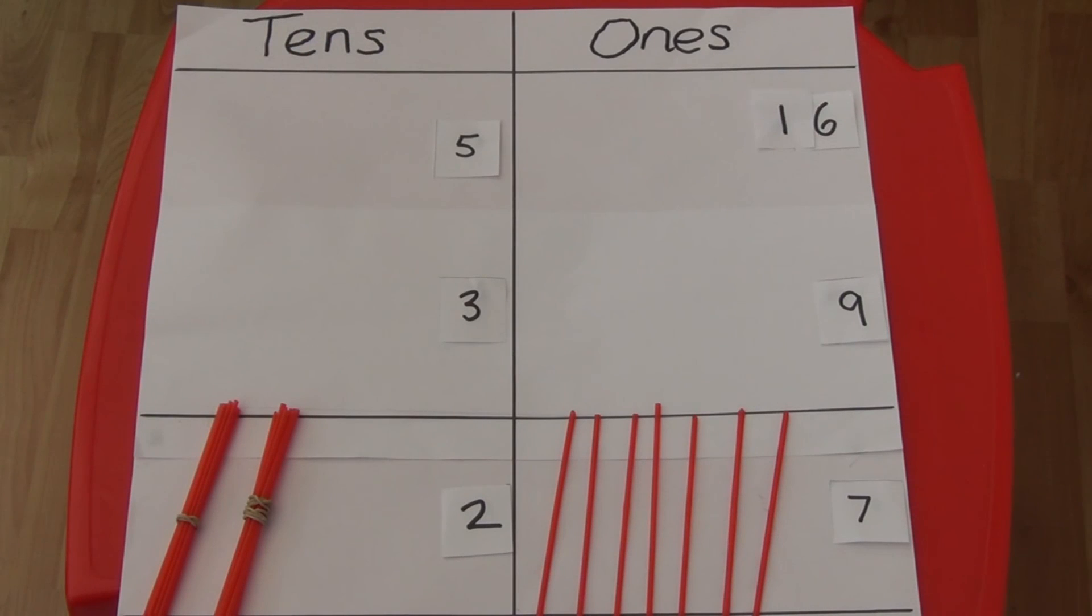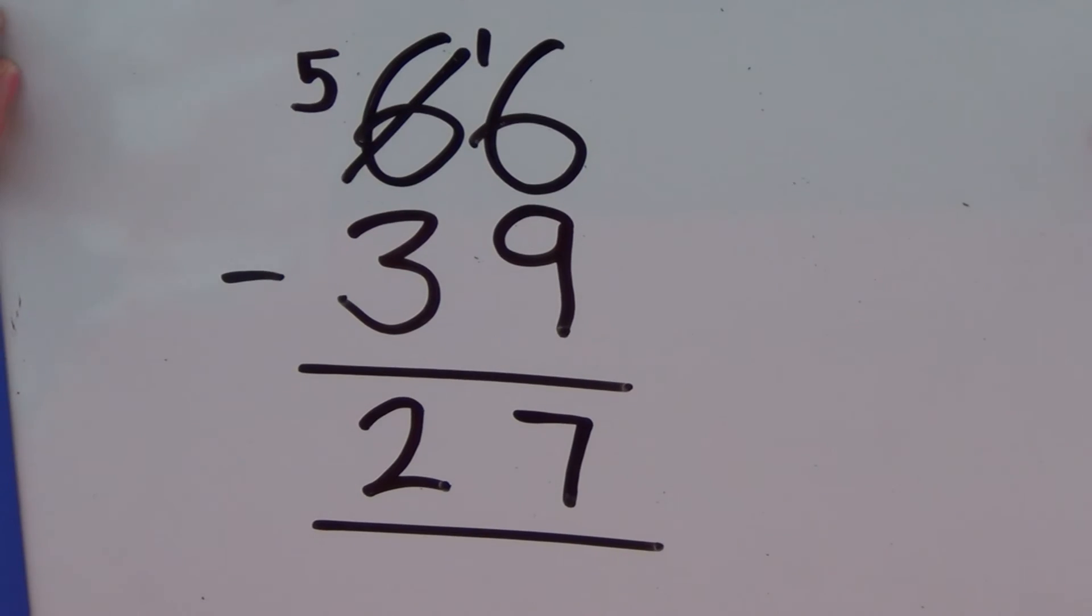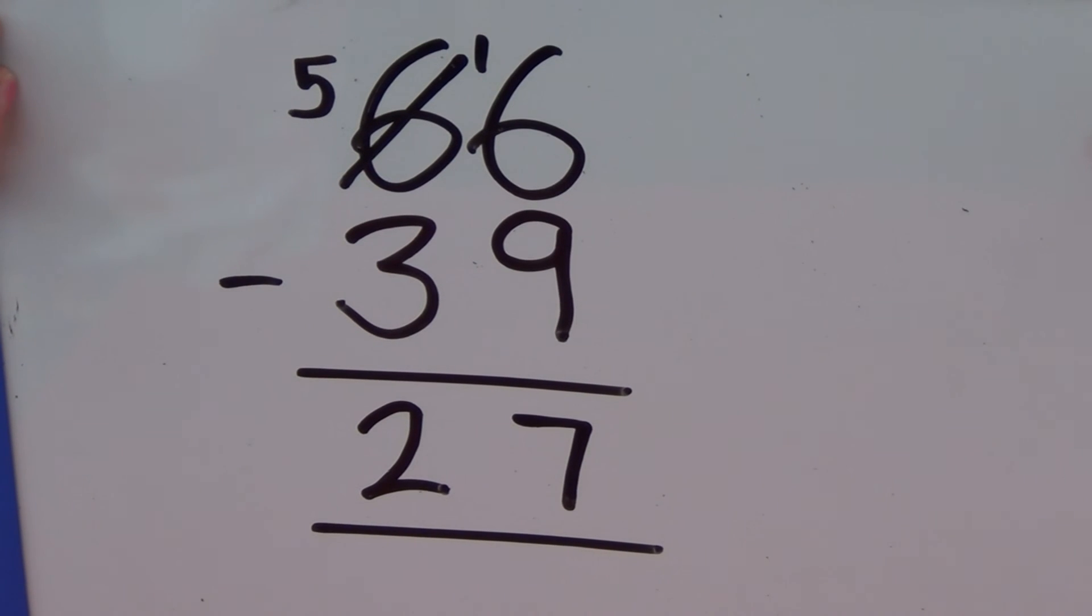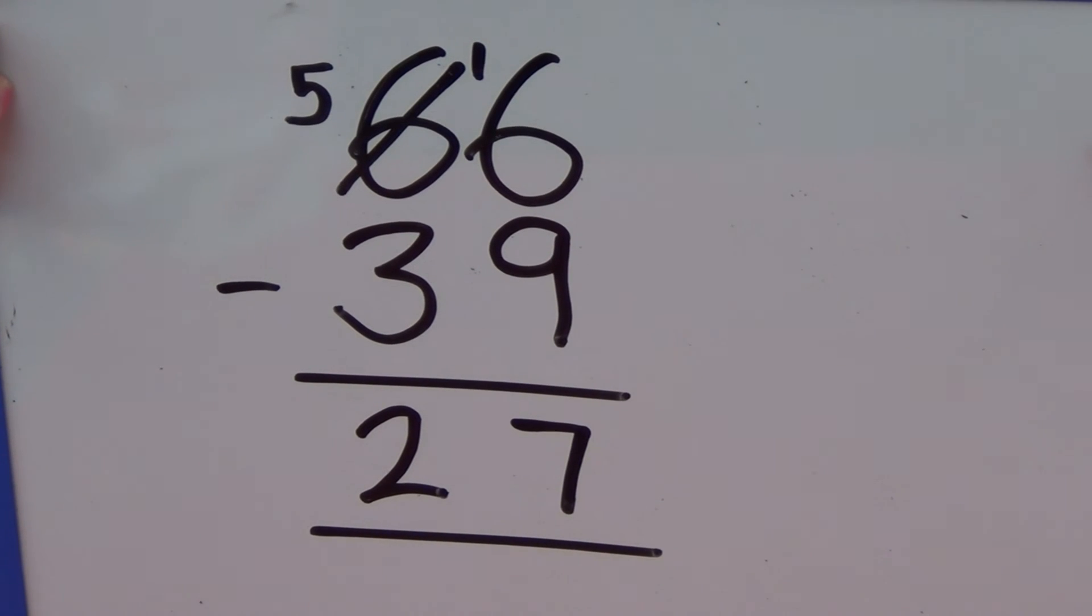16 straws take away 9 is 7 and 5 tens take away 3 is 2 tens which is 20. We can see this as written method without straws. So 66 take away 39 equals 27.